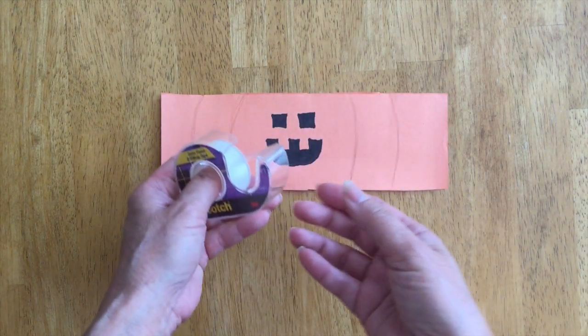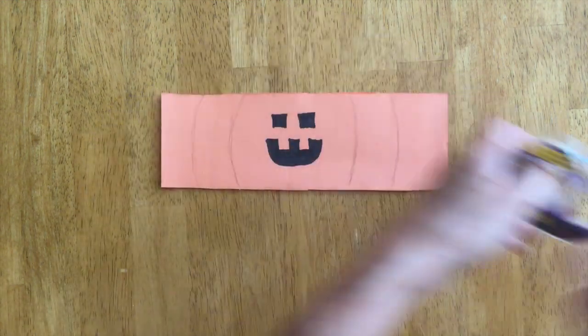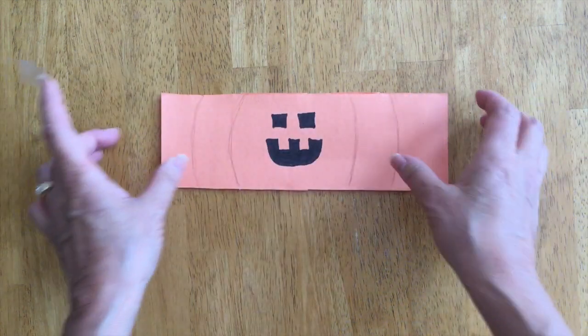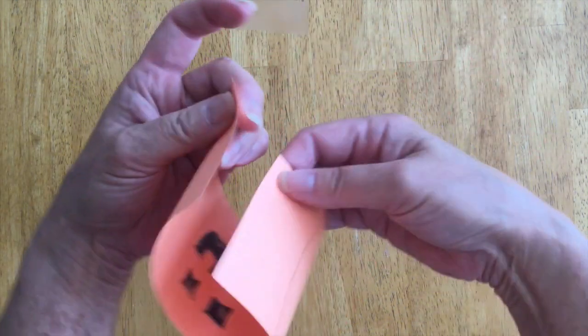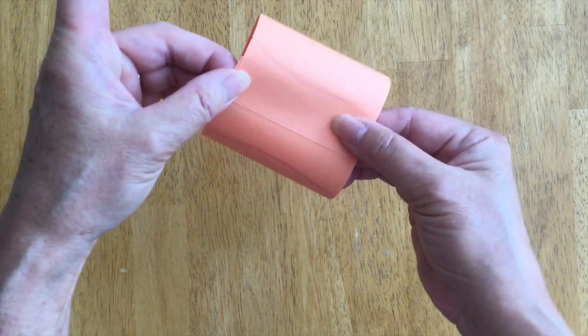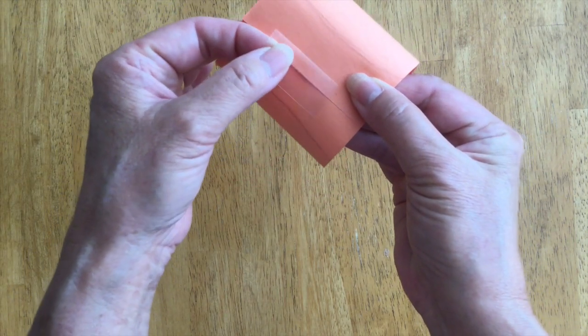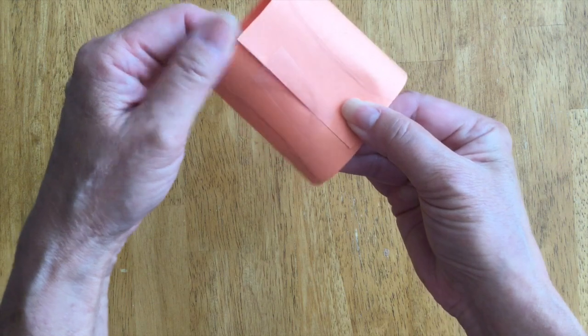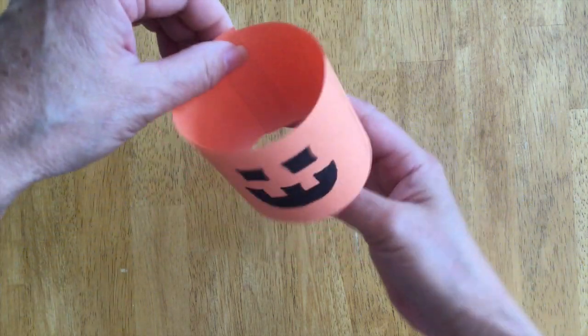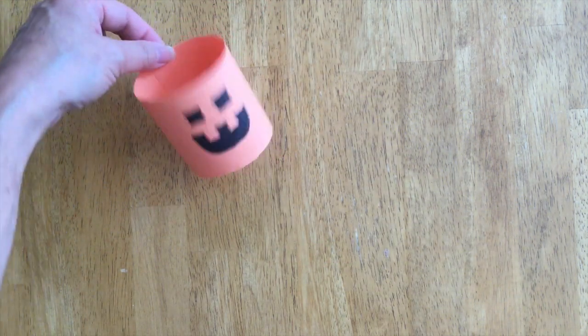So what you'll do next is take some tape and roll them up so that they are like that, match up the edges, put the tape on it so that it covers the seam, and then you can stand it up like this and it'll look like that.